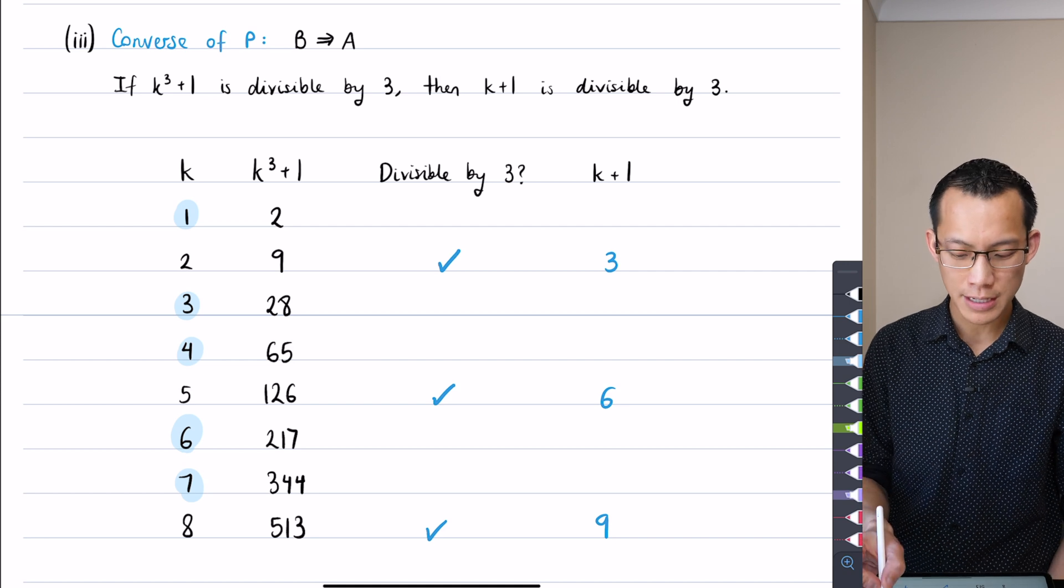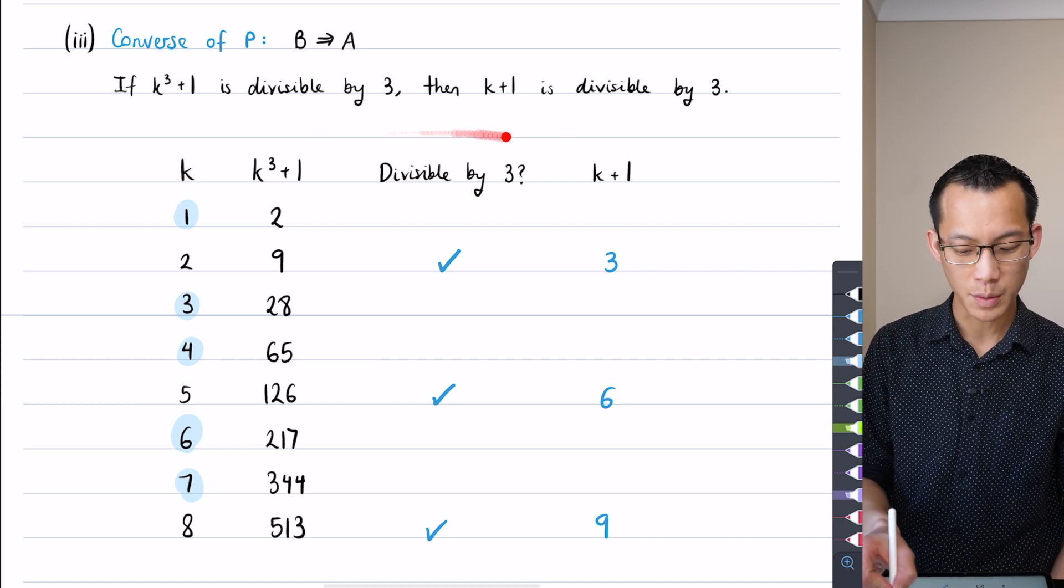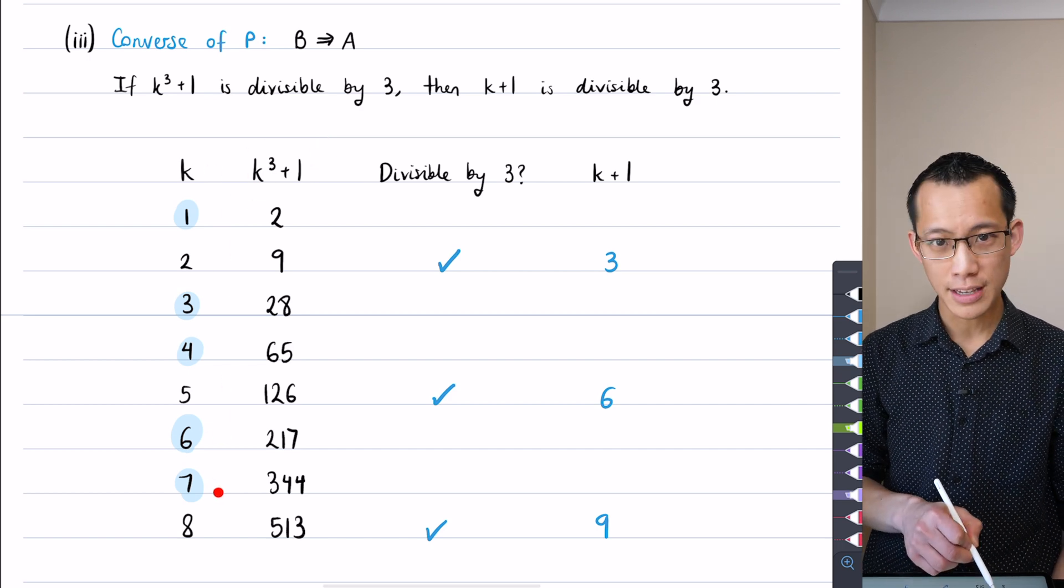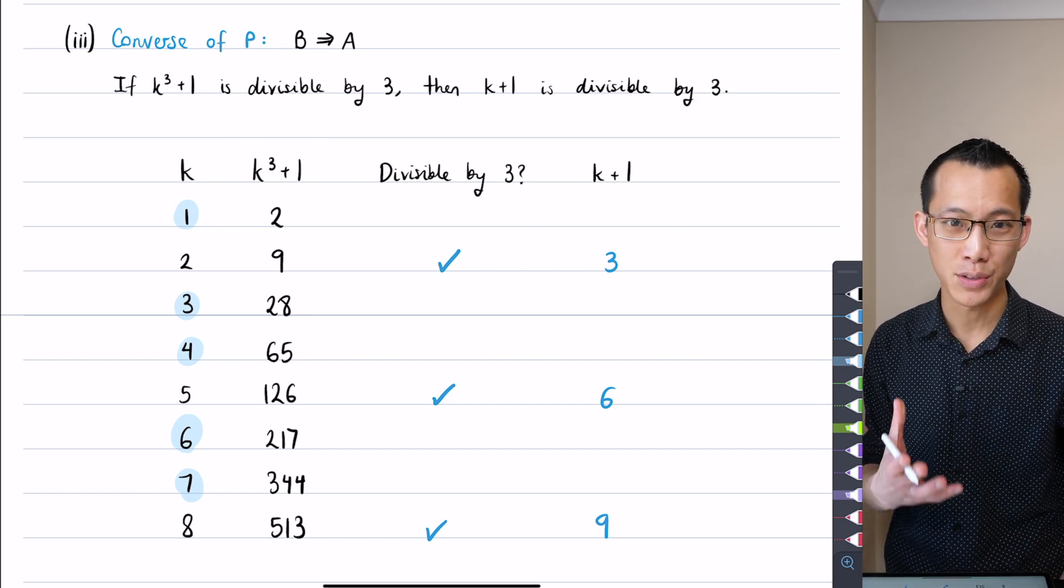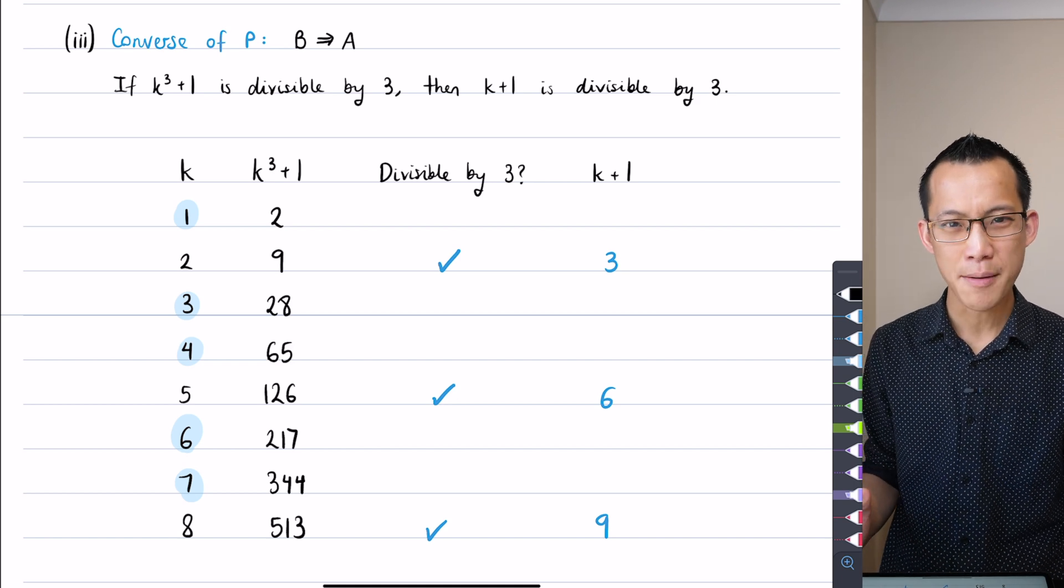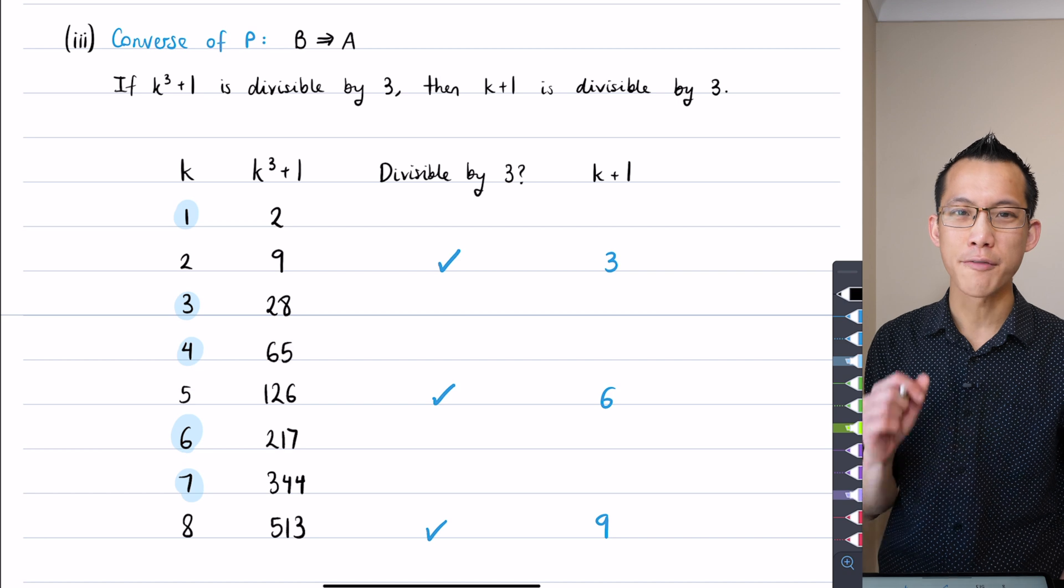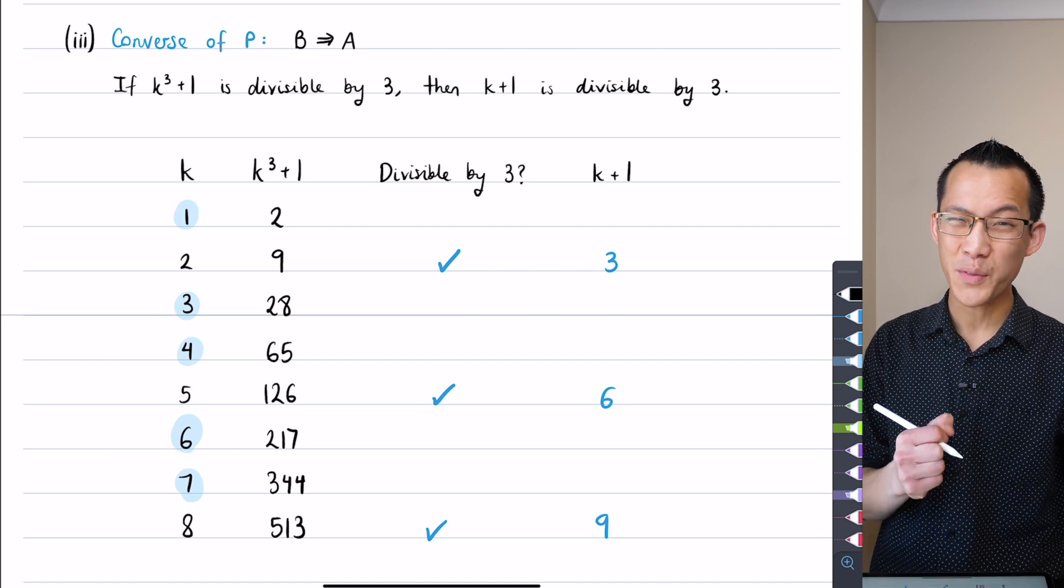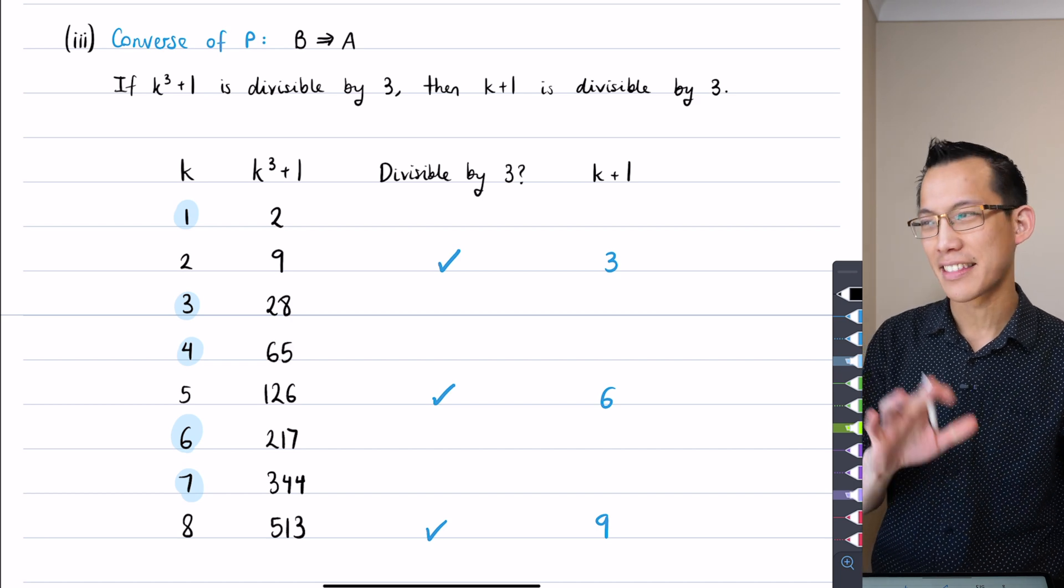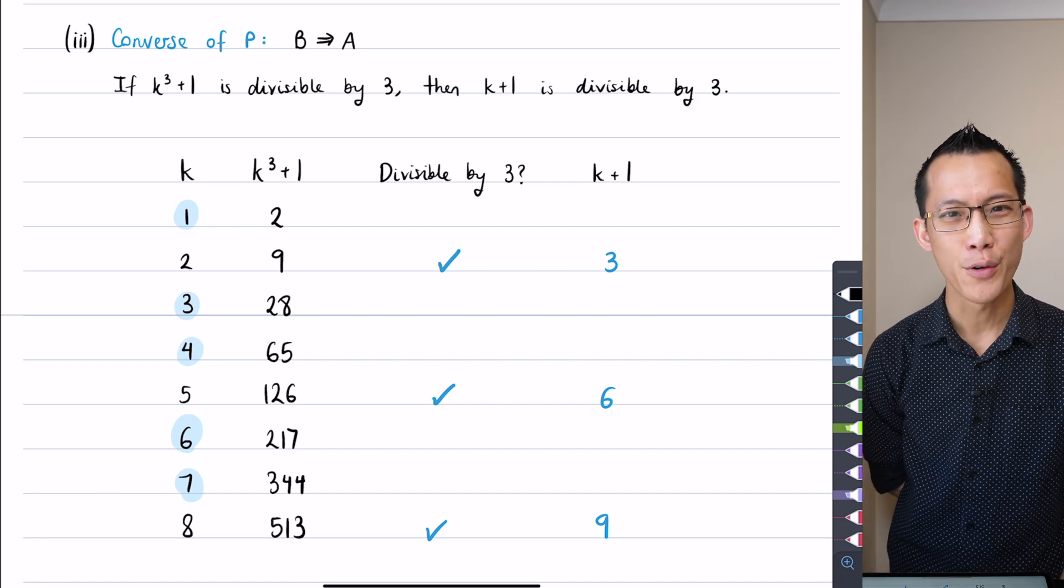But you couldn't test just 3 and 6 and 9, or I should say 2 and 5 and 8, because you'd be missing the possibility of counter examples. You'd only be testing in this direction from k+1 to k³+1. We've actually got to test everything here to make sure we know whether it breaks or not.